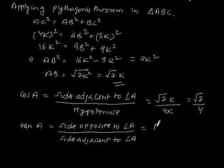This is equal to BC by AB, which is equal to 3K by root 7K, which gives tan A is equal to 3 by root 7.